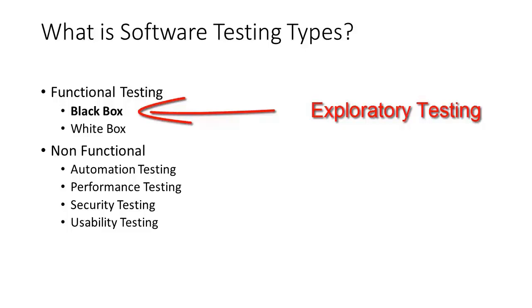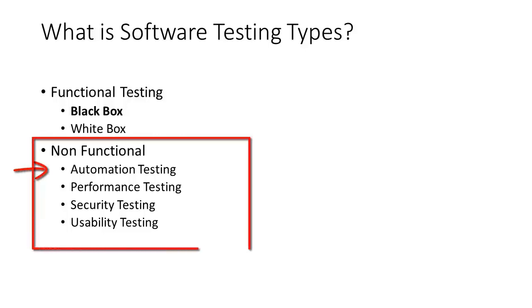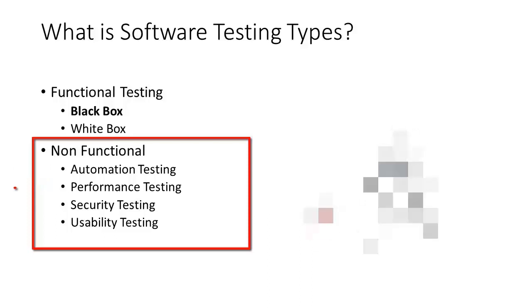We also have non-functional testing types. In functional testing, you test a functionality — black box without knowledge of internal structure, or white box while knowing internal knowledge. Non-functional testing types include automation testing, where you automate the tests you've done. For example, when testing Facebook with advanced tools, logging in and checking is automated so that every time Facebook releases a new version it is tested automatically, avoiding wasting time redoing specific tests. You will most likely never do automation on uTest or Bug Finders.